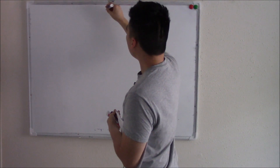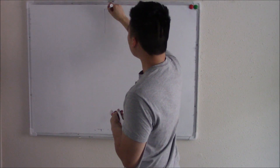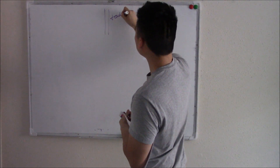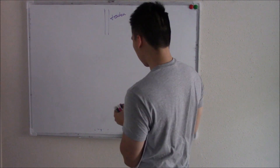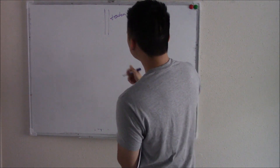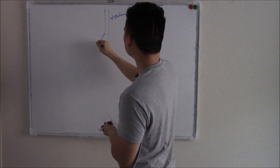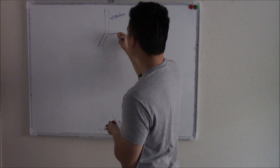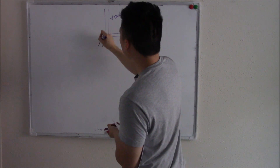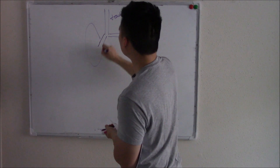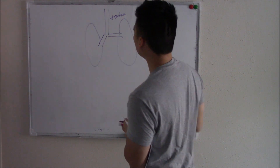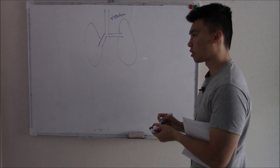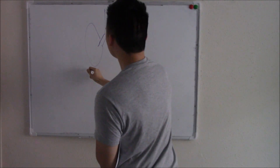When you take a deep breath in, air will go into your windpipe — your trachea — and your trachea will bifurcate into your right and your left lungs. Your right and left lungs are not the same.